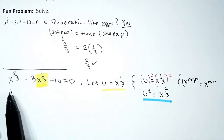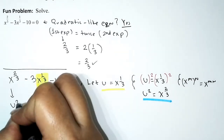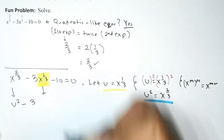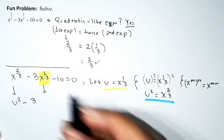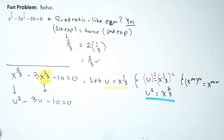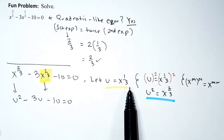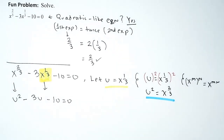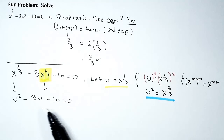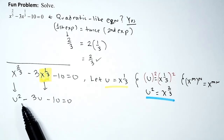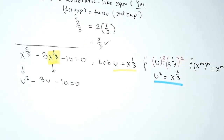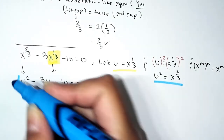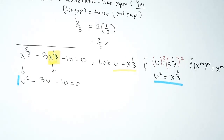After substitution, x^(2/3) becomes u², and x^(1/3) becomes u, giving us u² - 3u - 10 = 0. We now focus on this degree-two quadratic equation. The first thing I ask: is the leading coefficient 1? In this case it is, which makes factoring less intense.